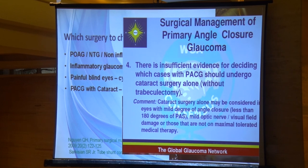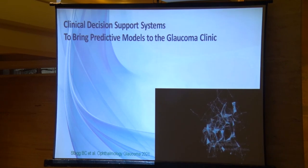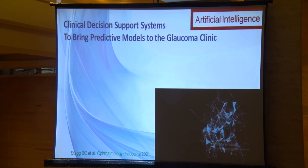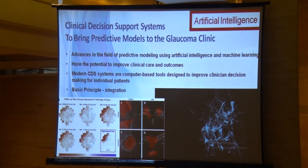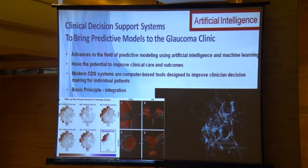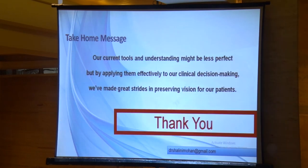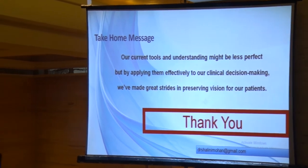Finally, artificial intelligence in glaucoma is an emerging field — data from thousands of patients including visual field data and optic disc data are being integrated so that clinicians at peripheral centers can diagnose patients using AI tools. We are doing a collaborative project with AIIMS Rishikesh. The take-home message is that despite our current tools and understanding being slightly imperfect — especially in cases of glaucoma suspect — we can effectively apply them in clinical decision-making to preserve vision and give patients a good quality of life.